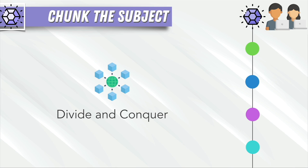Divide and conquer is another way to chunk a subject. When you encounter a big problem, break it down into small pieces — small chunks you can store in long-term memory. This also helps us get past the obstacles of learning. Businesses like Apple don't suddenly create the iPhone; over the years they learned to build a computer, optimize a chip, make touchscreens, create apps, and each chunk of knowledge leads to further progress.